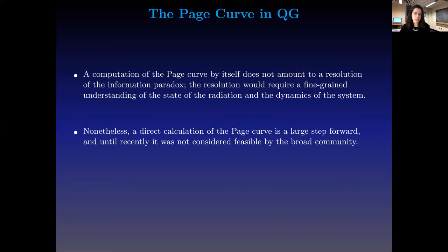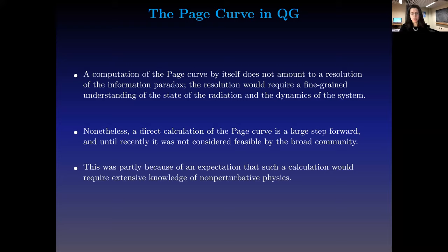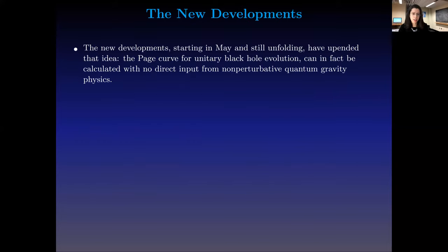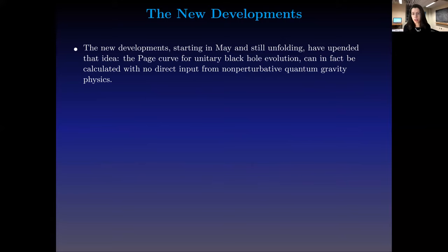Until recently, direct calculation of the page curve was not considered feasible by the broad community, partly because of an expectation that it would involve extensive knowledge of non-perturbative physics. But the new developments — starting in May — suggest this appears not to be the case. We can calculate the page curve for unitary black hole evolution with no direct input from non-perturbative quantum gravity, using just semi-classical techniques. That's something I find really remarkable.